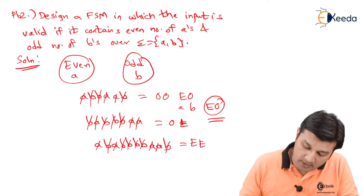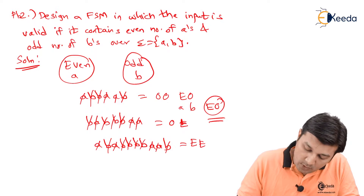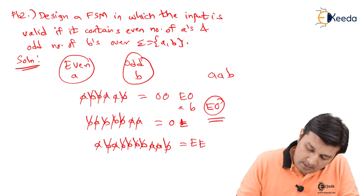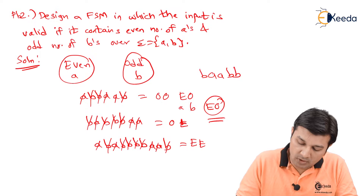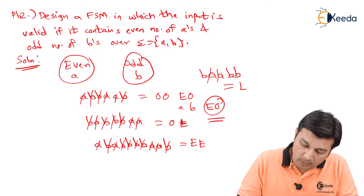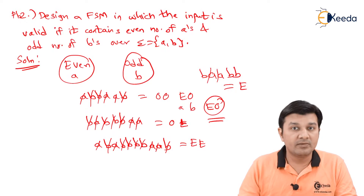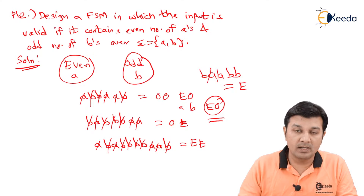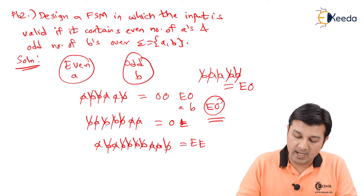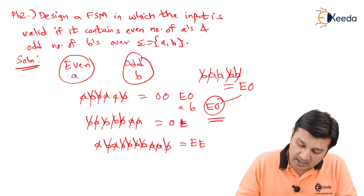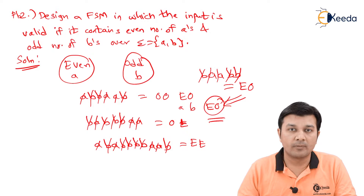Last example: input is A, A, B, B, B. Counting the number of A's — number of A's are 2, therefore even as expected. Counting the number of B's: 1, 2, 3 — number of B's are odd as expected. That is exactly the combination which we were looking for.